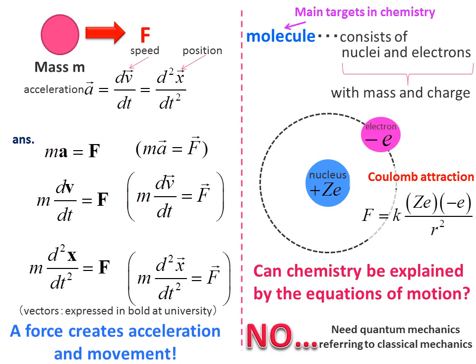Acceleration means how much the speed increases per second. Mathematically, acceleration is expressed as the time derivative of velocity. The velocity is the time derivative of the position. Because the speed is how much distance it moves per second, the acceleration is ultimately expressed as the second derivative of position with respect to time.